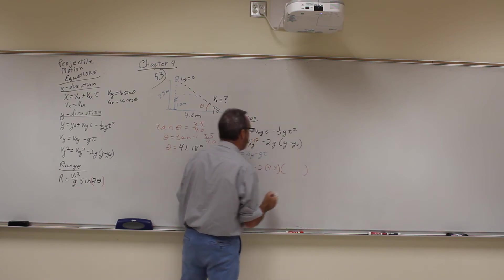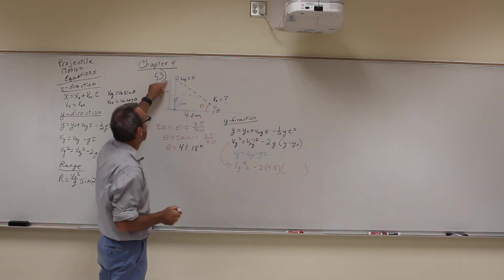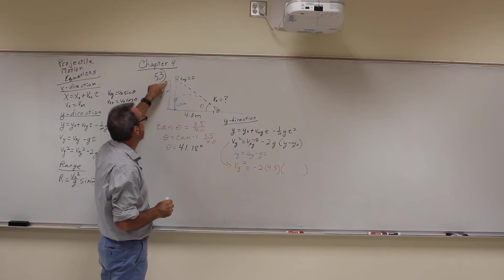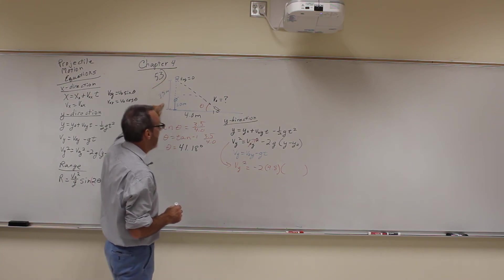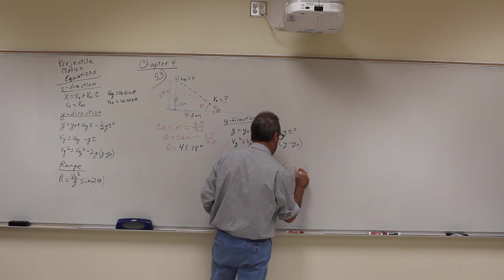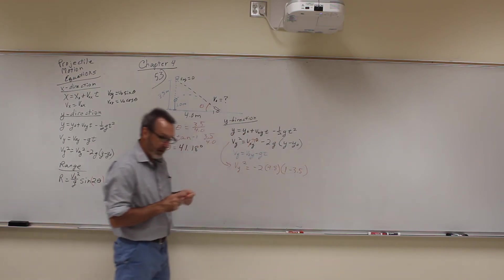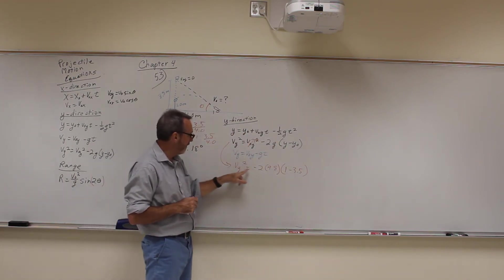And then we have the distance it falls here, right? So its initial starting point is 3.5, the final is 1. So we have 1 minus 3.5. And I know you were worried because there was a negative here, like oh I can't take square root of a negative. It's alright.